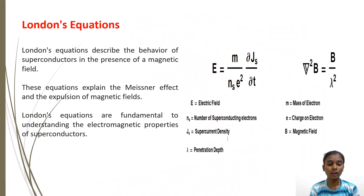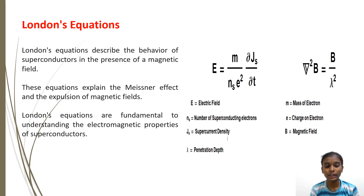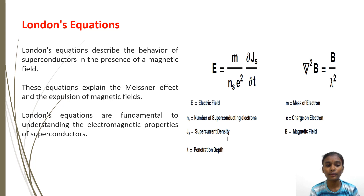London's equations, developed by brothers Fritz and Heinz London in 1935, are constitutive relations for a superconductor relating its superconducting current to electromagnetic fields in and around it. London's equations describe the behavior of superconductors in the presence of magnetic fields, and explain the Meissner effect and the expulsion of magnetic fields.